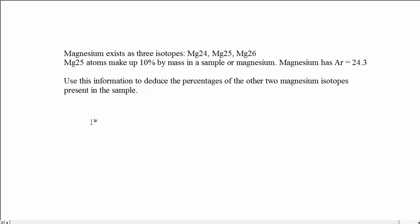Alright, here we go. Let's have a look at this problem. We're told that there's 10% by mass of magnesium 25. So we've got 10% magnesium 25. Magnesium's obviously got a mass of 25.